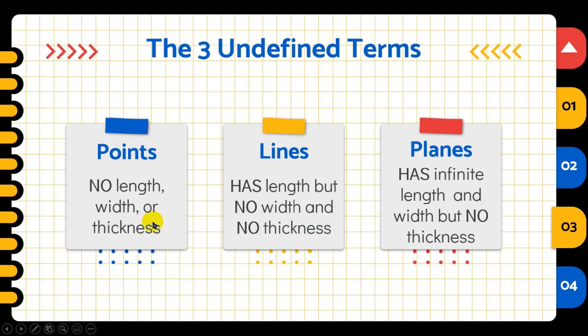Points has no length, no width, or thickness. It's just one dot. And on this screen, we have different points. For lines, we have this description: it has length, but no width and no thickness. So it has length but no width and thickness. Then for planes, it has infinite length and width, but no thickness. So these are the three undefined terms. Let us know more about these undefined terms.